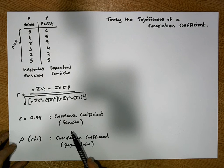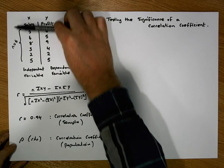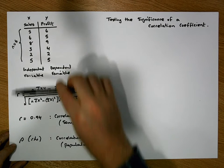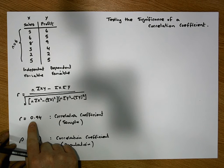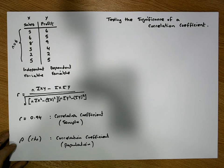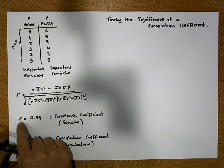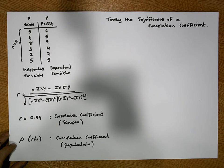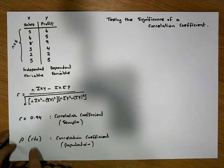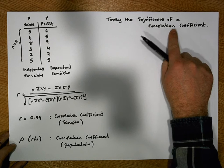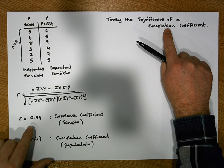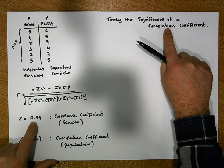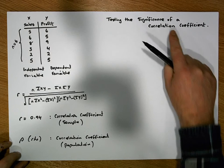What we'd like to test is: based on the evidence we've captured and the sample correlation coefficient we've calculated, is there evidence to support that this correlation coefficient is representative of the population it was drawn from? To do that, we undertake a significance test with respect to the significance of the correlation coefficient we've observed.